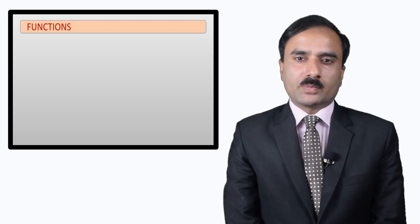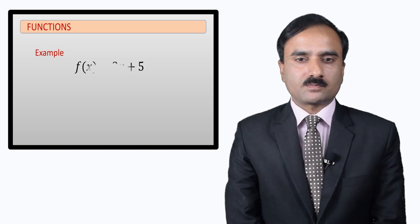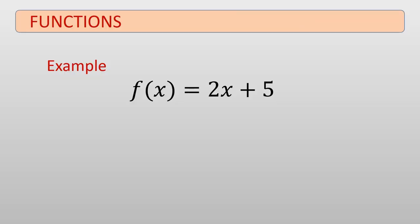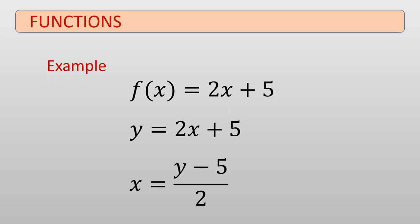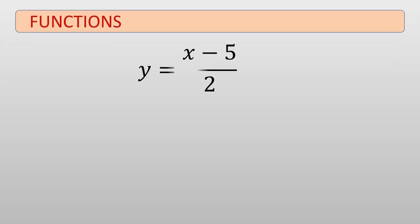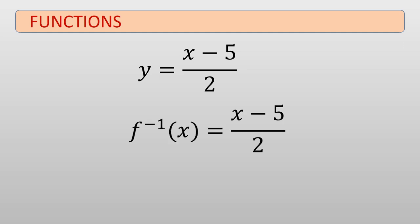Let's do a quick example on finding the inverse of a function. Given f of x equals 2x plus 5: first, replace f of x with y to get y equals 2x plus 5. Then solving for x gives x equals y minus 5 over 2. Now interchange x and y to get y equals x minus 5 over 2. Finally, replace y with f inverse of x to obtain f inverse of x equals x minus 5 over 2.